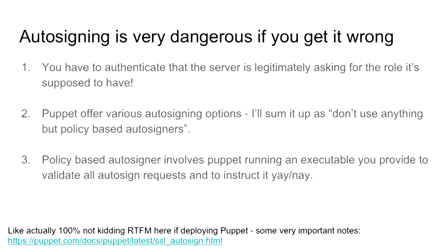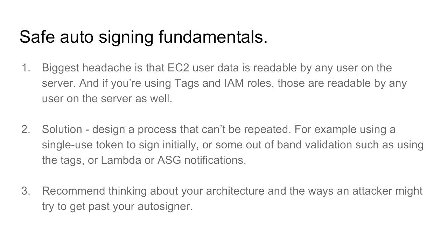The summary is: don't use anything but the policy auto-signer. That is a model where Puppet will execute a program you provide, give it the details received from the agent, and you are responsible for deciding whether or not to accept that certificate signing request. The biggest problem is your first instinct will be to put a password in the user data.